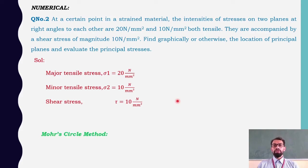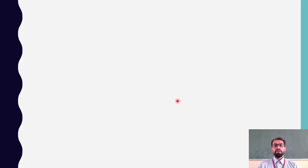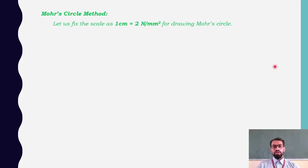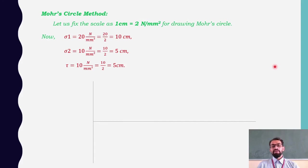Solution: major tensile stress sigma 1 = 20 N/mm², minor tensile stress sigma 2 = 10 N/mm², and shear stress tau = 10 N/mm². We fix the scale as 1 cm = 2 N/mm² for drawing the Mohr circle. Converting: sigma 1 = 20 ÷ 2 = 10 cm, sigma 2 = 10 ÷ 2 = 5 cm, tau = 10 ÷ 2 = 5 cm.